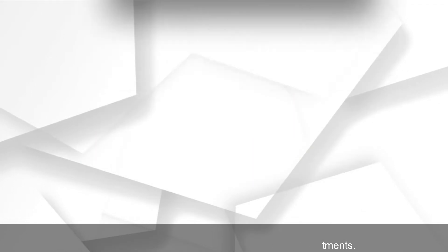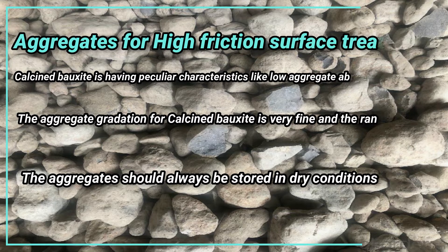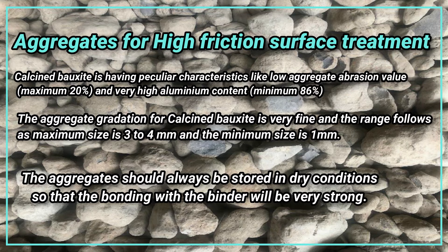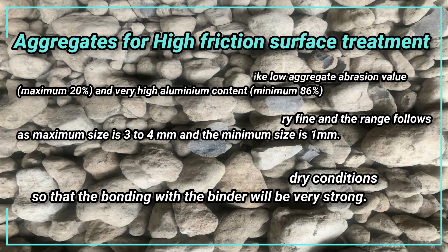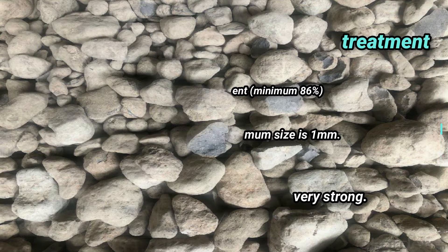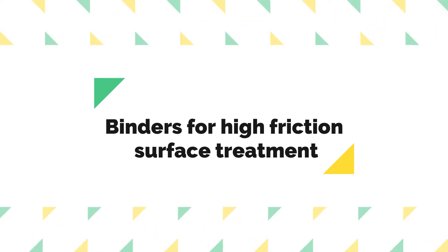Recent studies suggest using blast furnace slag as an alternative aggregate. Calcined bauxite has peculiar characteristics like a low aggregate abrasion value (maximum 20%) and very high aluminum content (minimum 86%). The aggregate gradation for calcined bauxite is very fine, with a maximum size of 3 to 4 millimeters and a minimum size of 1 millimeter. The aggregates should always be stored in dry conditions so that the bonding with the binder will be very strong.